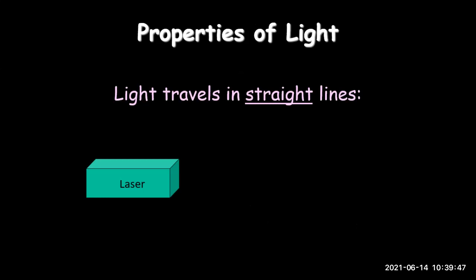The first property of light is that light travels in a straight line. There is a demonstration here — when we turn on this laser beam, we see a light coming out in a straight line. It is not crisscross, it is not curved. Light always travels in a straight direction.